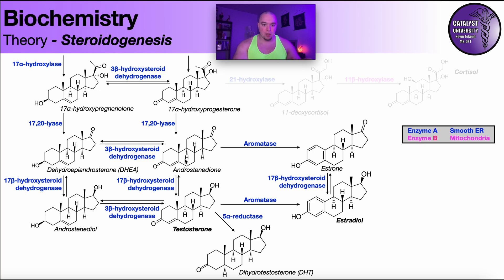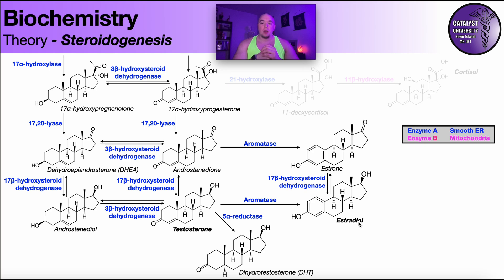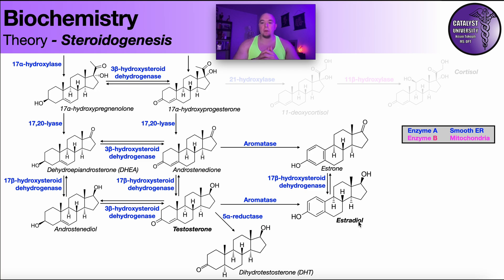Aromatase acts on ring A of the steroid, aromatizing it and adding a hydroxyl group. Androstenedione is converted to estrone, and testosterone is converted to the most well-known estrogen, estradiol, which is made primarily in the ovaries. The key point is that to make estrogens, you must first make the androgens — it's what happens to the androgens that determines the overall physiology and effect.